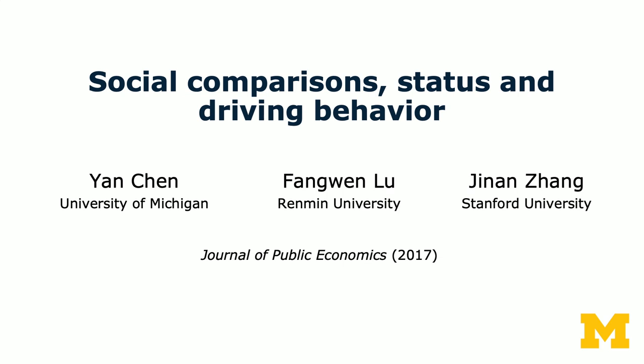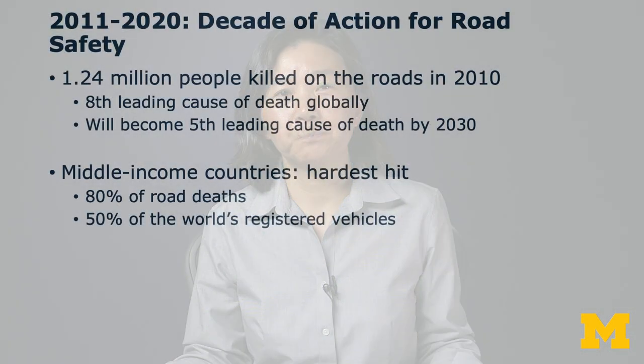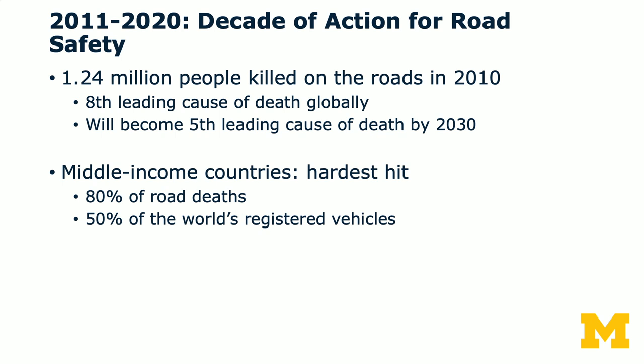This is a paper on social comparison, status, and driving behavior. I worked on this with a colleague Fang Wenlu from Renmin University and Jinan Zhang, who was a student at Stanford at the time. The idea of this paper is to think about whether we can use data and information to extract effective social comparisons to reduce negative externalities. The context is traffic violations. The decade between 2011 and 2020 was declared the decade of action for road safety. In 2010, 1.24 million people were killed on the road — it was the eighth leading cause of death globally, projected to become the fifth leading cause of death by 2030.